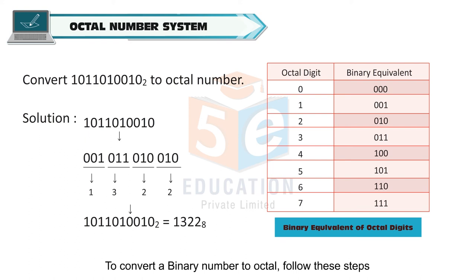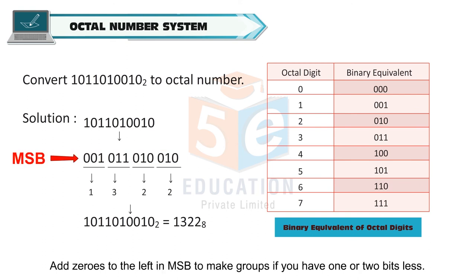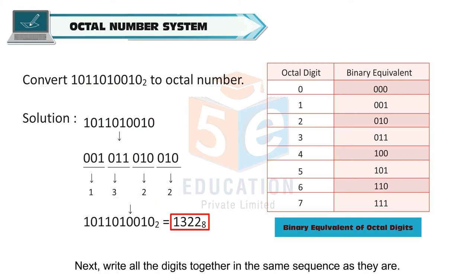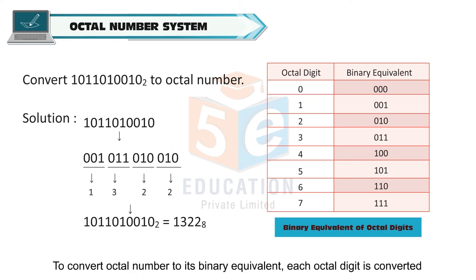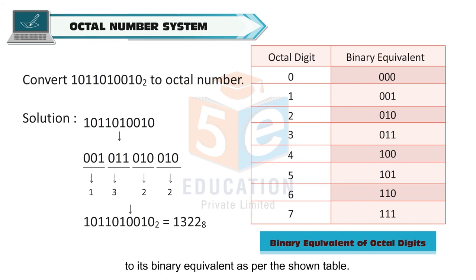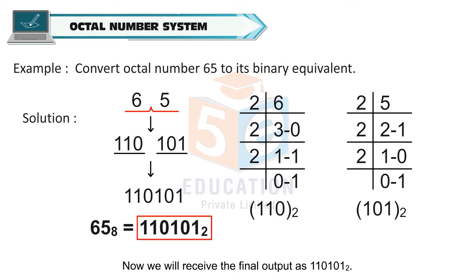To convert a binary number to octal, follow these steps. Starting from the least significant digit on the right, make groups of 3 bits. Add zeros to the left of the MSB to make complete groups if you have 1 or 2 bits less. Now, convert each group to its equivalent decimal number. Then write all the digits together in the same sequence. To convert an octal number to its binary equivalent, each octal digit is converted to its binary equivalent as per the shown table. For example, converting octal number 65 gives the binary output 110101 base 2.